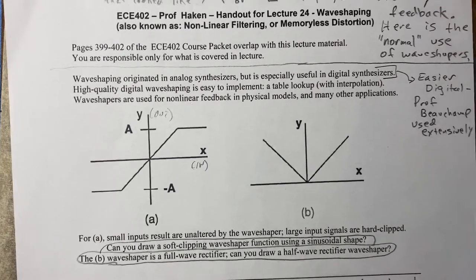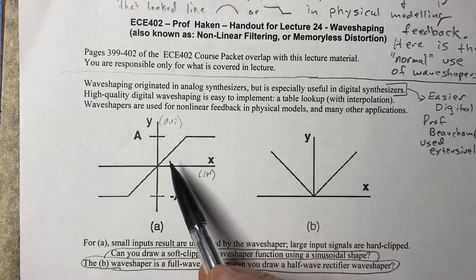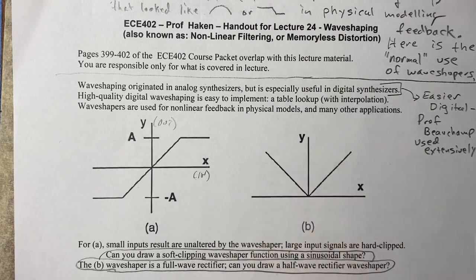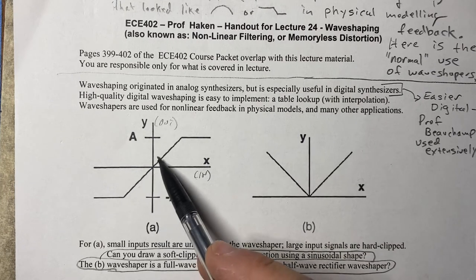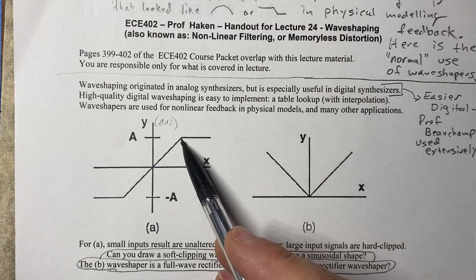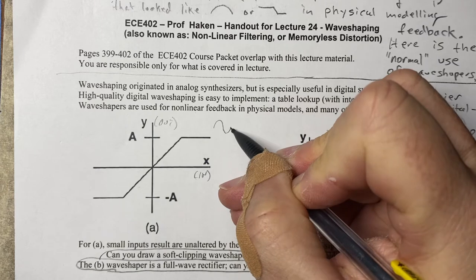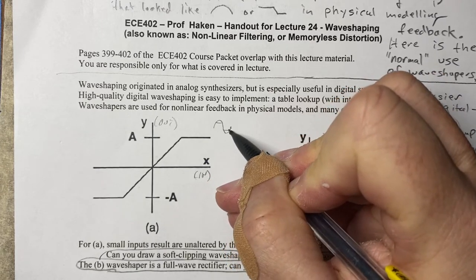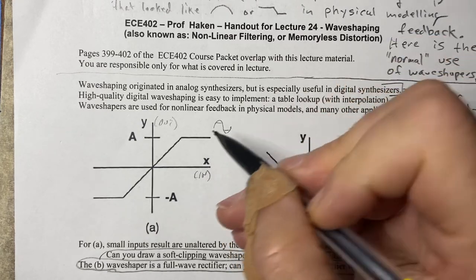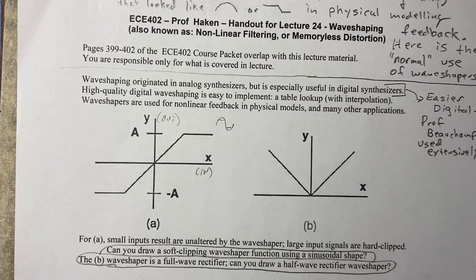Why would this be called non-linear distortion or memoryless distortion? Memoryless because there's just a table lookup — you take the current value and get an output, no memory involved. Distortion: if you have a low-amplitude sinusoid input, a hard clipper doesn't distort it. But if your sine amplitude goes very high — beyond the clipping point — the hard clipper flattens it. Instead of having a nice rounded waveform at one frequency, you've added lots of harmonics due to those sharp corners. Even a soft clipper adds harmonics, though not suddenly.